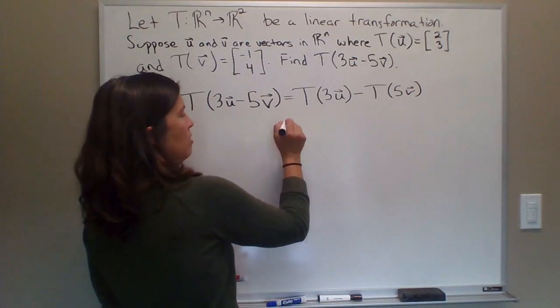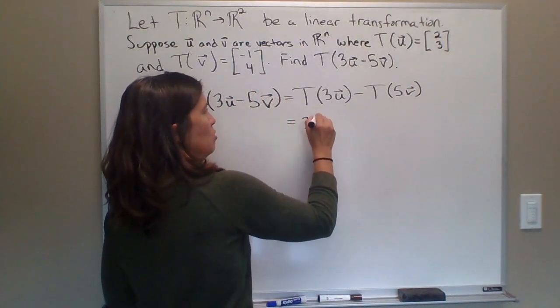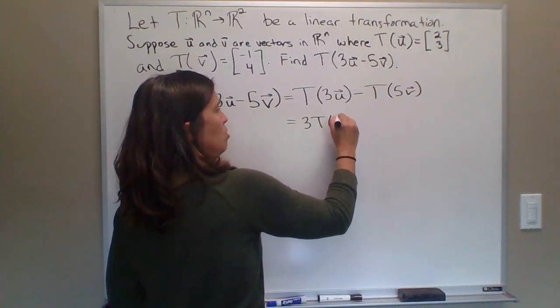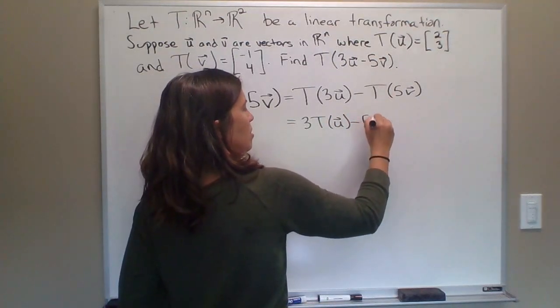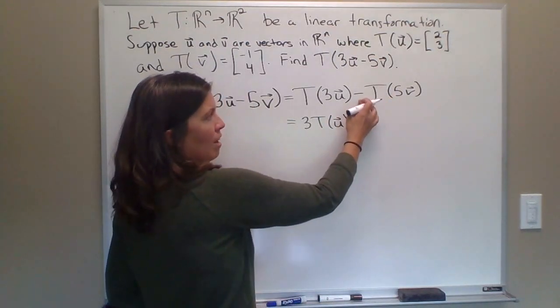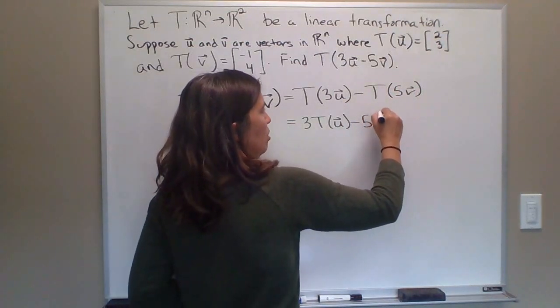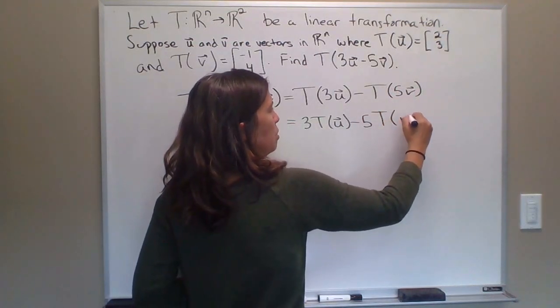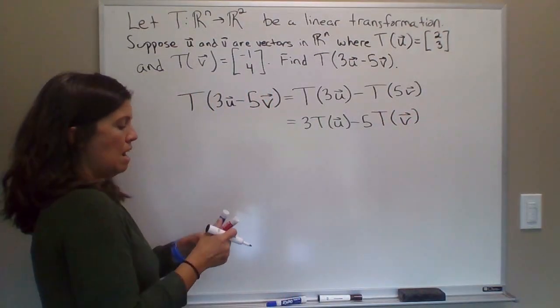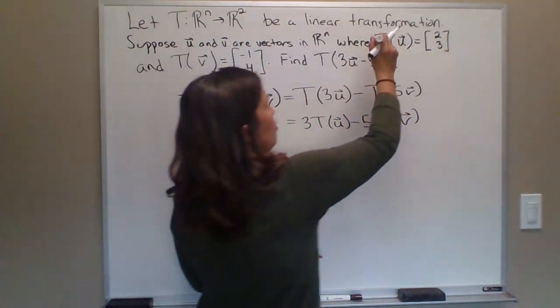And then we can pull out scalars. So this is equal to 3 times T(u), pull out the 5, or the negative 5. I could have written plus and then a negative 5 here to pull out negative 5. Either way you want to think about it, we end up in the same place here: T(v). And now we can use that given information.